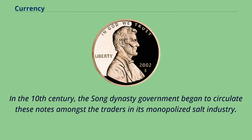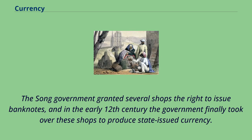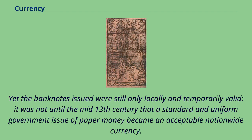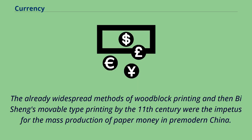In the 10th century, the Song Dynasty government began to circulate these notes amongst the traders in its monopolized salt industry. The Song government granted several shops the right to issue banknotes, and in the early 12th century the government finally took over these shops to produce state-issued currency. Yet the banknotes issued were still only locally and temporarily valid; it was not until the mid-13th century that a standard and uniform government issue of paper money became an acceptable nationwide currency. The already widespread methods of woodblock printing and then Bi Sheng's movable-type printing by the 11th century were the impetus for the mass production of paper money in pre-modern China.